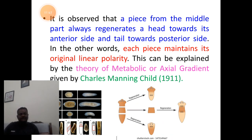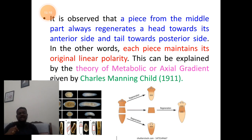The cut middle piece of planaria always regenerates a head at the anterior side first, and a tail at its posterior end follows later. That is, it maintains a linear polarity towards the anteroposterior axis.